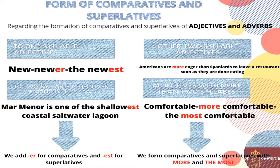Regarding the formation of comparatives and superlatives of adjectives and adverbs: to one-syllable adjectives we add -er to form the comparative and -est to form the superlative, as in 'new, newer, the newest,' for example. Remember that to two-syllable adjectives ending in -ly, -y, and -w, we also add -er or -est.